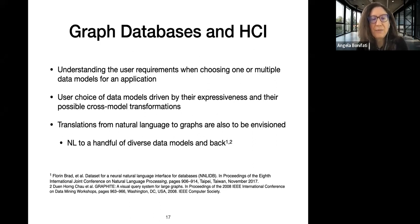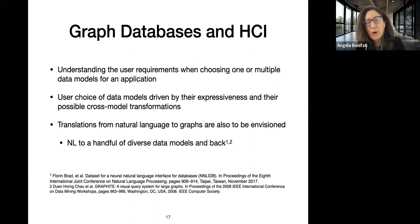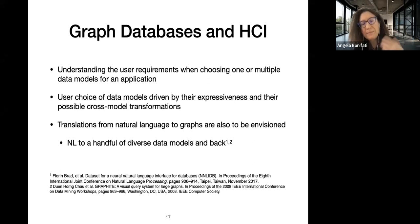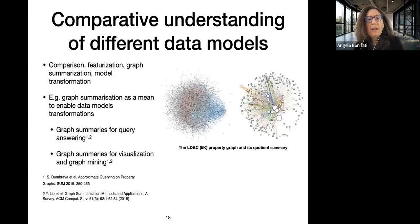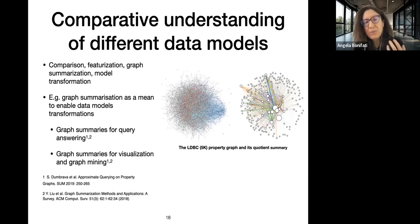Natural language to graph translation has not been applied to property graphs as far as I know — it has been studied for SQL and the relational data model, but it is really not yet investigated for graph databases. This could be a future topic for students who want to continue in research.